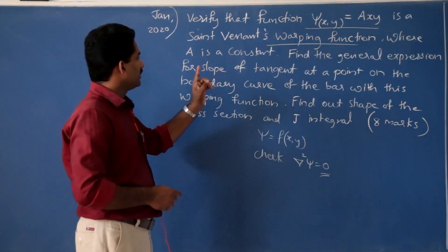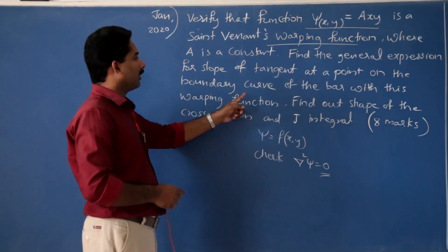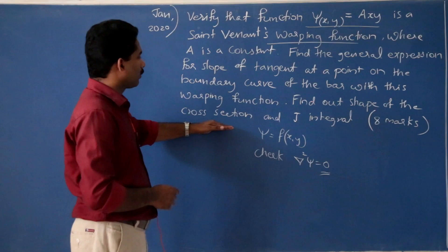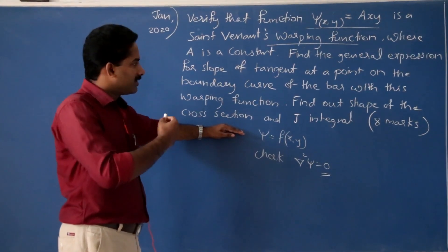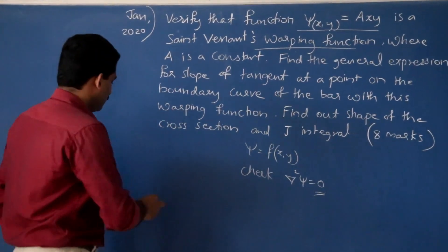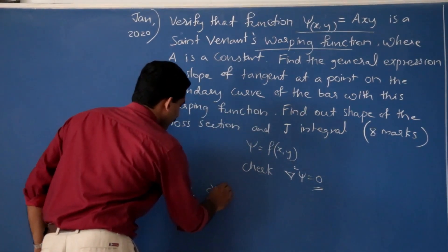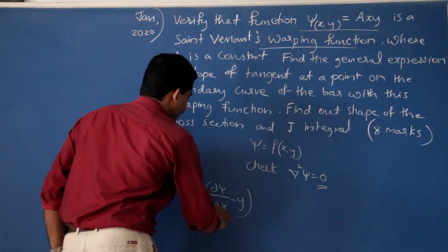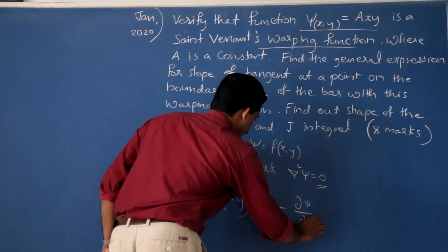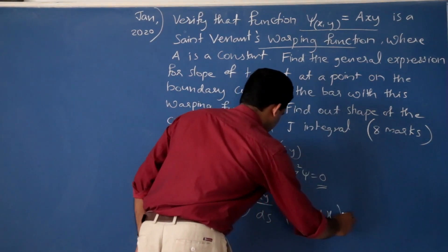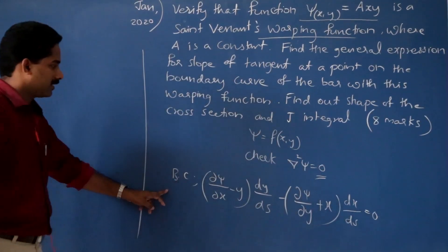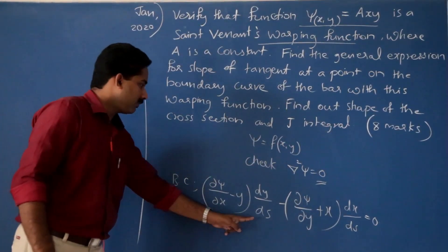Now, find the general expression for slope of tangent at a point on the boundary curve. To find the shape of the cross section, we first write the boundary condition: ∂ψ/∂x − y · (dy/ds) − ∂ψ/∂y + x · (dx/ds) = 0. This is our boundary condition. Now we substitute ∂ψ/∂x and ∂ψ/∂y.